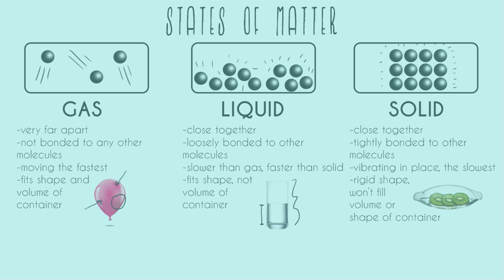Solids have a rigid shape and won't fill the volume or shape of a container. Here we have kiwis in a glass bowl — even though they're in the glass, the kiwis have their own shape. They don't fill up the volume like a gas would, and they don't fill the shape like a liquid or gas would. A solid essentially says: I have my own shape and my own volume, no matter what container you put me in.